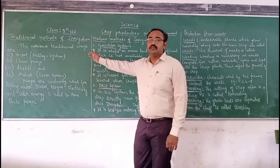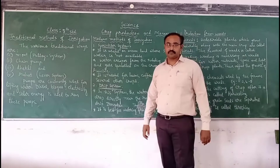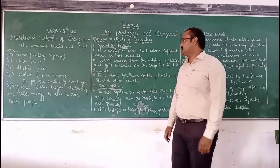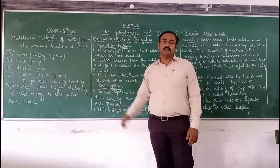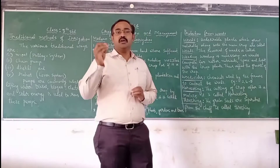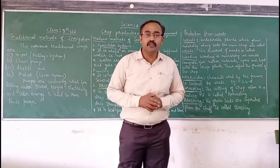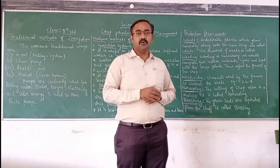Now let us understand the modern methods of irrigation. The first one is the sprinkler system. This sprinkler system is useful on uneven land where sufficient water is not available. In the sprinkler system, the water escapes from the nozzles and it appears as though it rains.